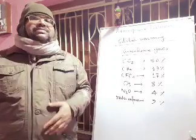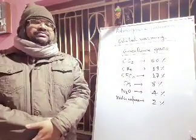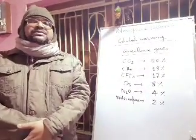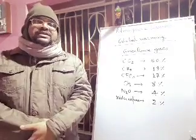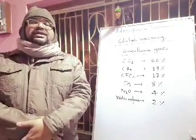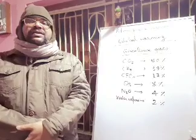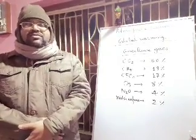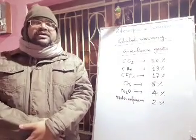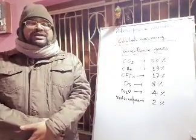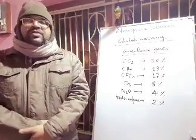Next we will discuss the mechanism of greenhouse gases. There are mainly three types of radiation in sunlight: one is ultraviolet, another is visible radiation, and another is infrared radiation, called IR radiation. The wavelength of ultraviolet is 1 nanometer to 400 nanometer — one nanometer equals 10 to the power minus 9 meters. Visible radiation is 400 nanometer to 750–800 nanometer, and IR radiation is 2.5 micrometer to 25 micrometer.